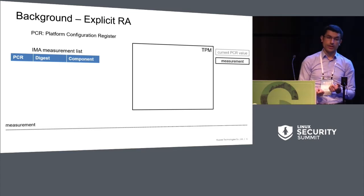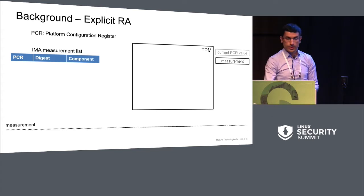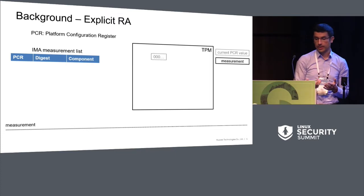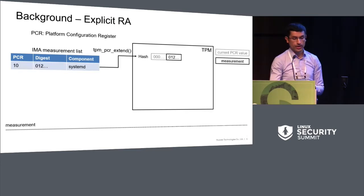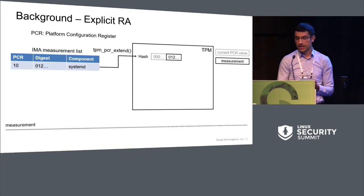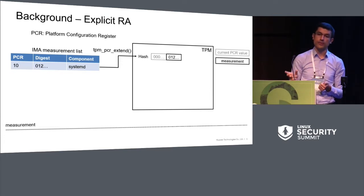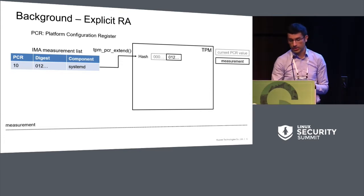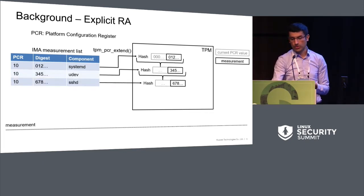We have two types of remote attestation: one explicit and one implicit. For explicit remote attestation, we have an initial value of the platform configuration register, which stores the system state. This is initialized to zero, and when IMA starts to perform measurements, it calls TPM PCR extend. The current PCR value is updated with the hash of the current value plus the digest of the measurement. This process is done for each entry that is added to the measurement list.